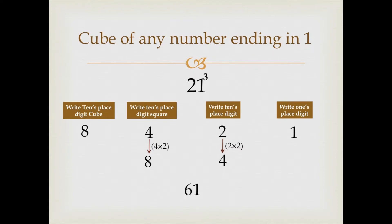8 plus 4 makes 12 but we cannot write 12 because 12 is a 2 digit number. So, write 2 here and 1 would be carried over to the next digit. And 8 plus 1 will become 9. So, we will write 9. Our answer is 9261.